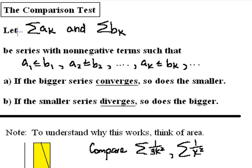In the theorem for the comparison test, we're asked to let the series of a sub k's and the series b sub k's be series with non-negative terms. By the way, in chapter 10, section 5 of the Anton Calculus textbook, all of the tests we're going to look at will only work for series with non-negative terms. We not only want the series to have non-negative terms, but we also have a certain relationship between the terms of the underlying sequences.